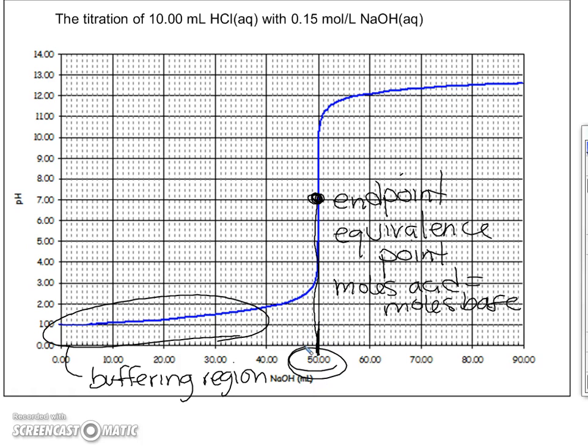At the end now there's no longer a buffering region. It's flat, but all it's signifying is that we have excess titrant. So those are the parts of the pH curve that you need to know. We have a buffering region at the beginning, we have the endpoint where the equivalence point has been reached where moles of acid equal moles of base, and then at the end we have our excess titrant.